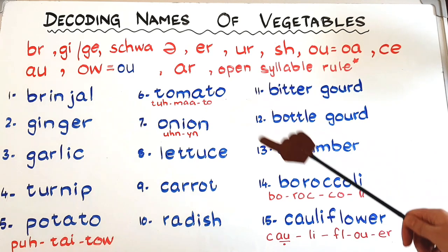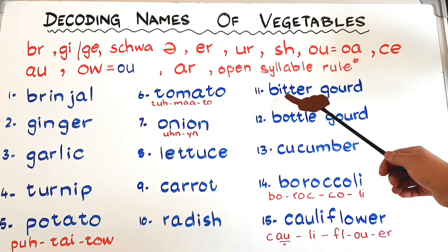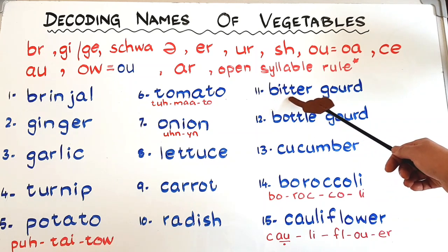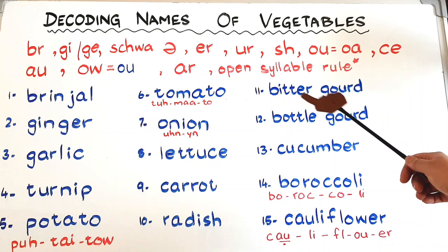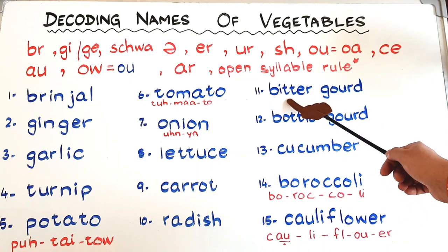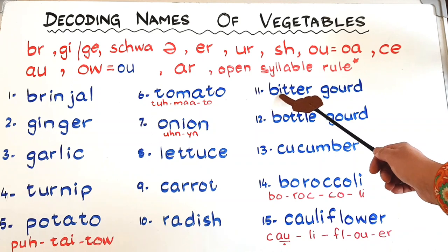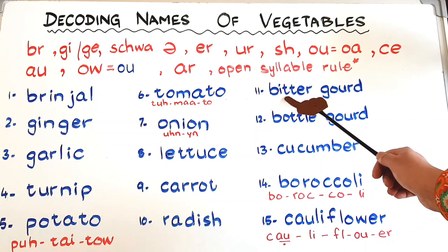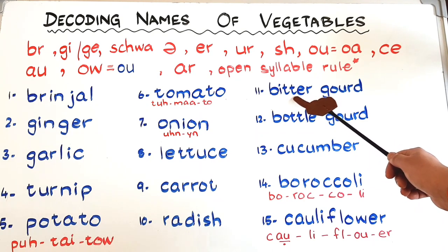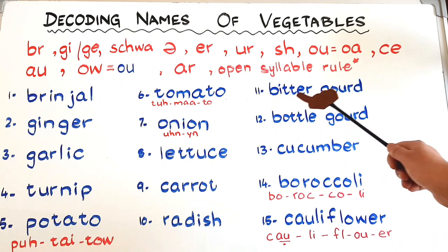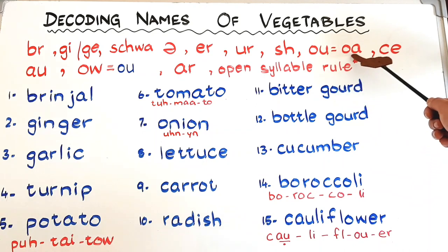Bitter gourd — if the children know phonics, the spelling is simple: B-I-T, 'bit', and a vowel. Why do we have a double T here? There is a rule: if you have two vowels and just a single consonant in between, like in 'bitter', double the consonant. So it becomes 'bit-uh' — bitter.